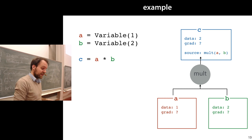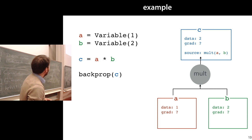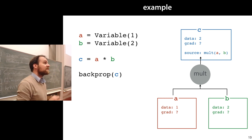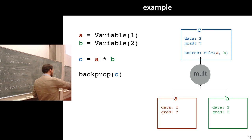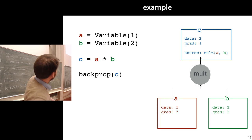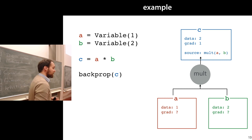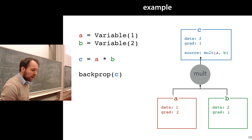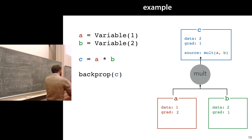At some point we tell the framework we want to do backpropagation - we say our computation graph is finished, we've ended up with this scalar value, now compute all the gradients. The framework goes back through the graph: the gradient of c over c is 1, the gradient of c over a is 2 (the value of b), and vice versa. That's the basics of how this system works.